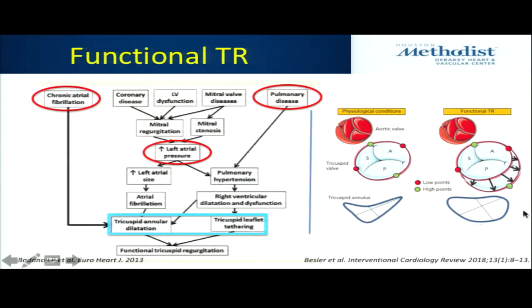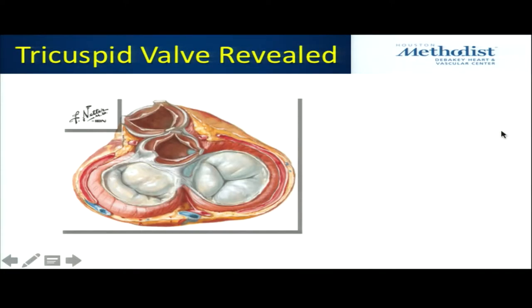This graphic shows the flattening of the annulus and where dilation occurs. The graphic on the right is probably the one that matters, because when we talk about things like MitraClip therapy, these are often targeted towards the septal and anterior leaflets of the tricuspid.